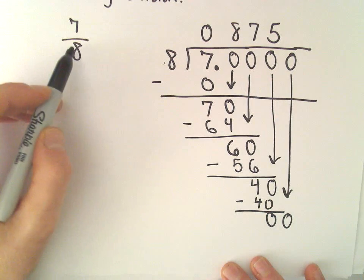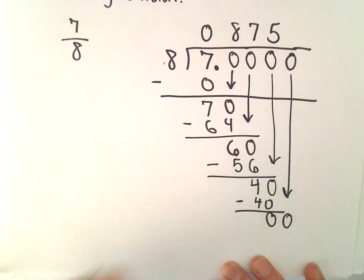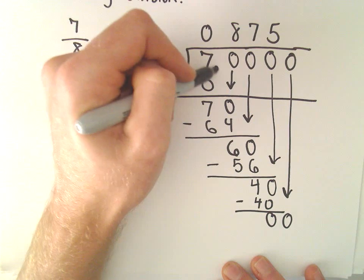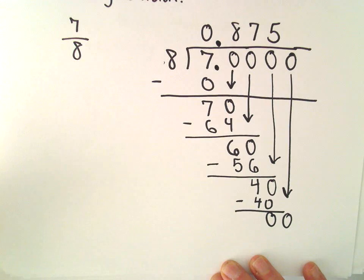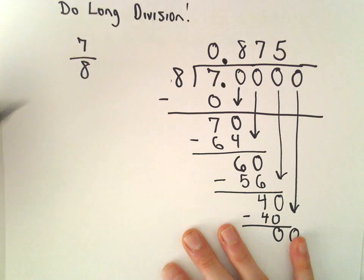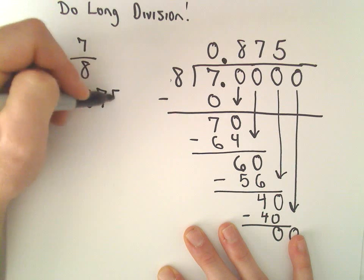So in this case, we just keep the decimal place exactly lined up. So we can write seven over eight as the decimal 0.875.